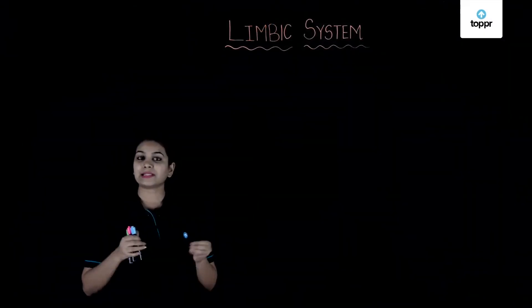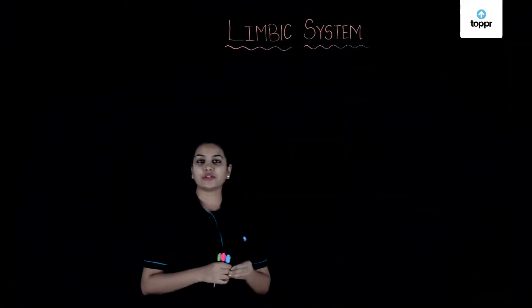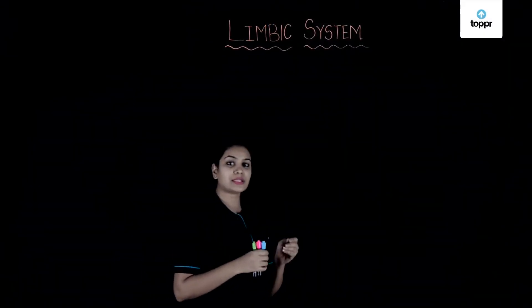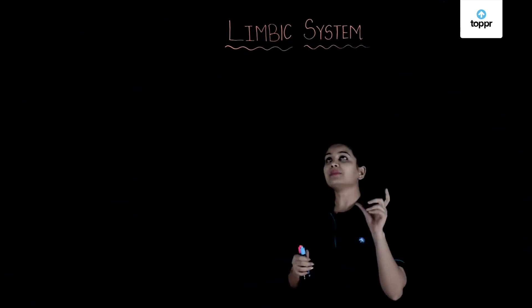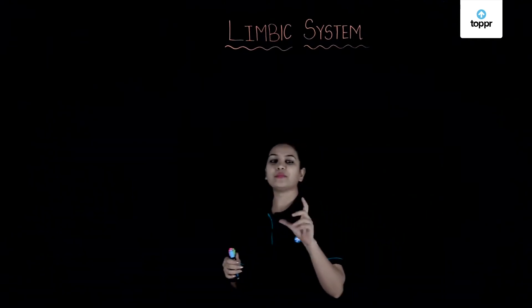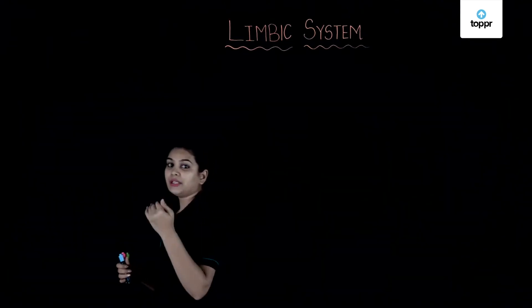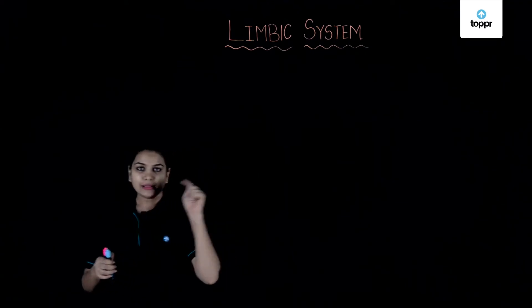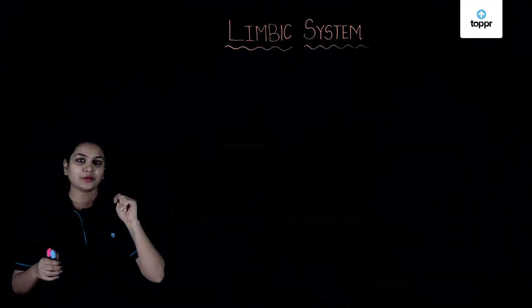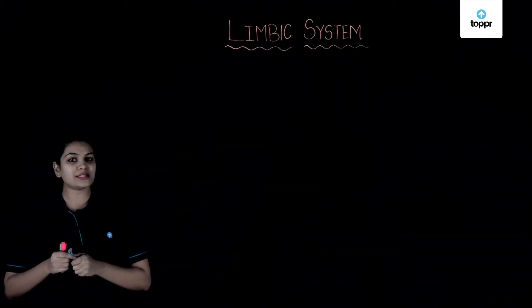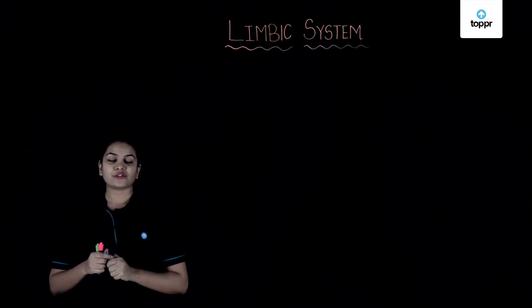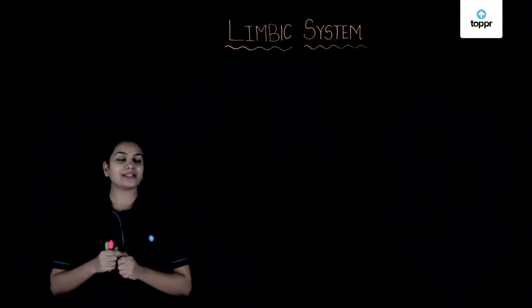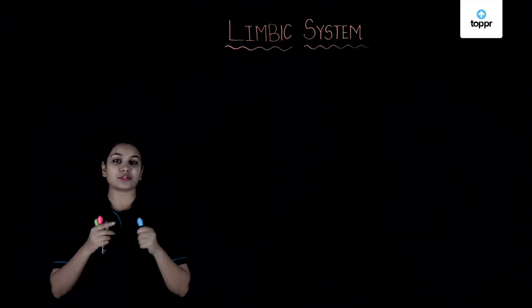In this lecture we are going to learn about the system called the limbic system. This limbic system forms an edge-like structure in the brain, like an L in shape. It constitutes various parts of cerebrum and diencephalon. Let's have a look at its major constituents.